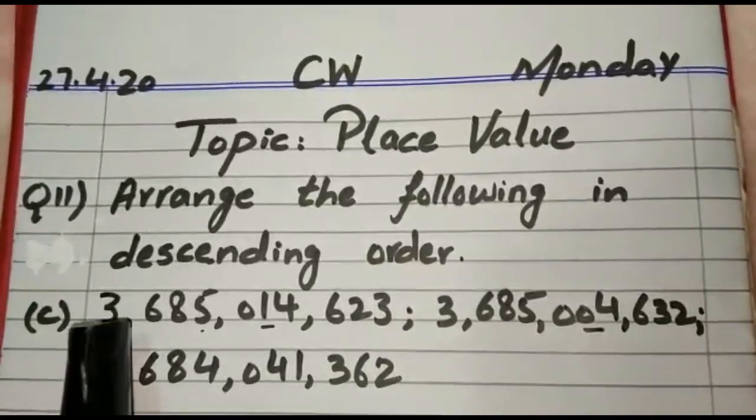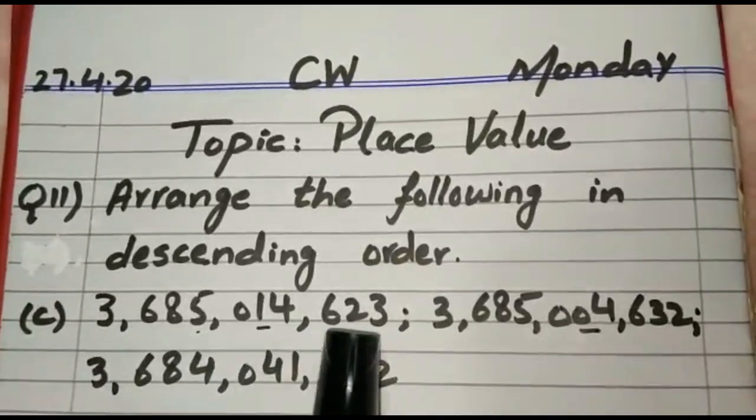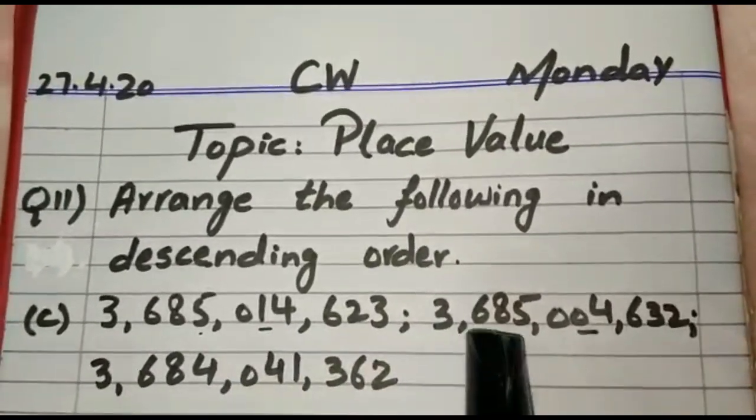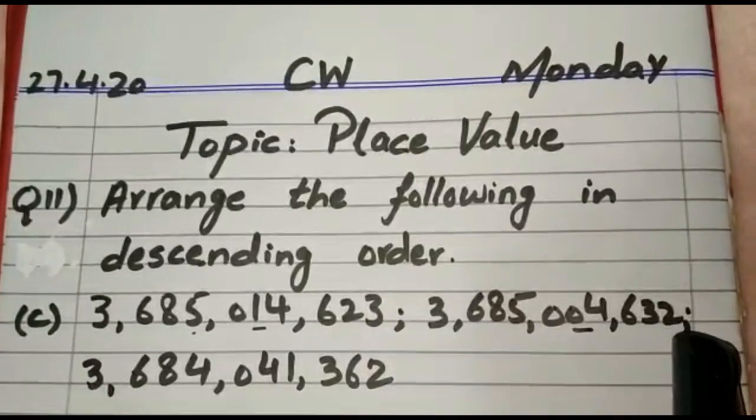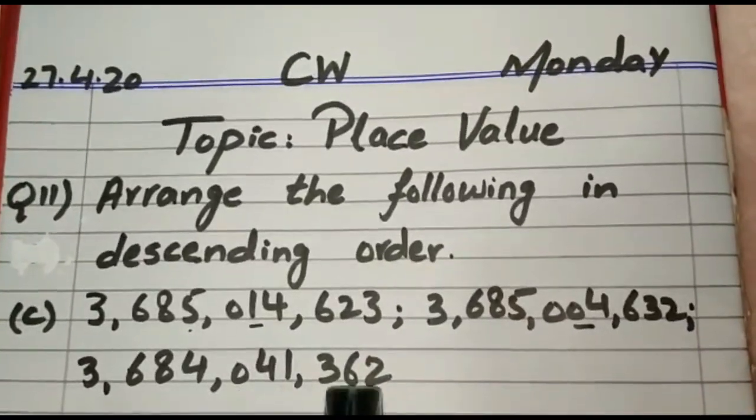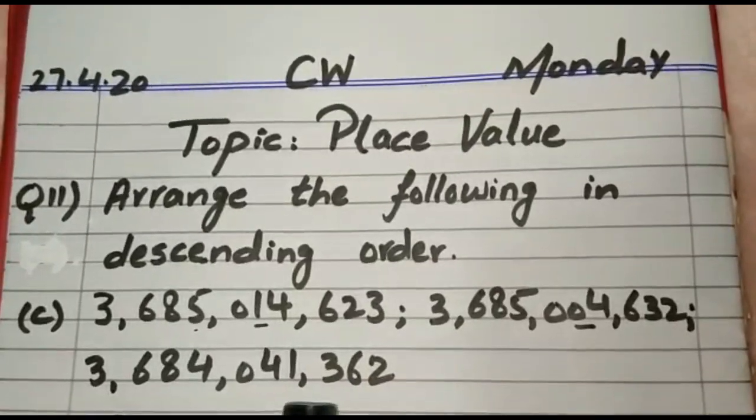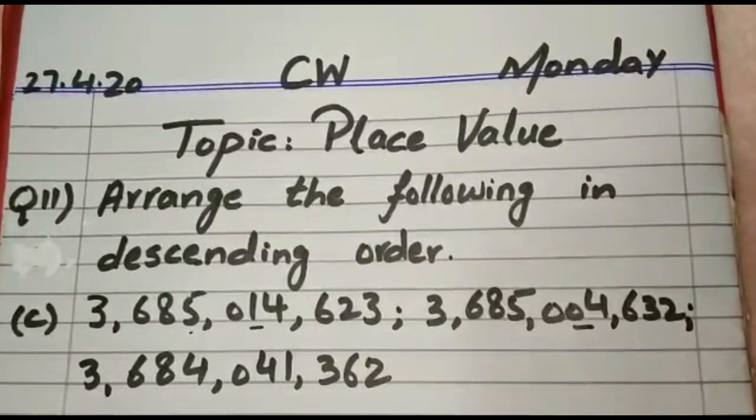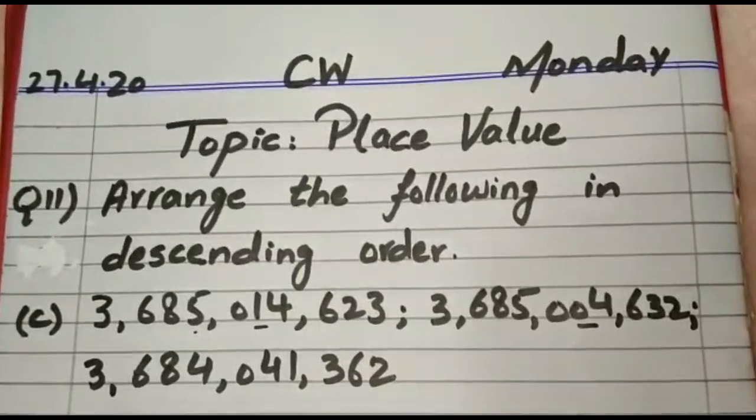Let's count. 1,2,3,4,5,6,7,8,9,10. 10 digits in first number. 1,2,3,4,5,6,7,8,9,10. 10 digits in second number. 1,2,3,4,5,6,7,8,9,10. 10 digits in third number. So all of them have equal number of digits. Let's move towards rule number 2.